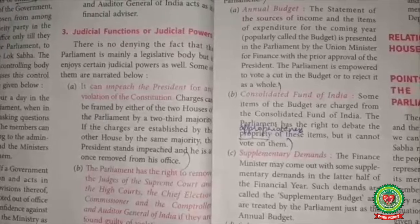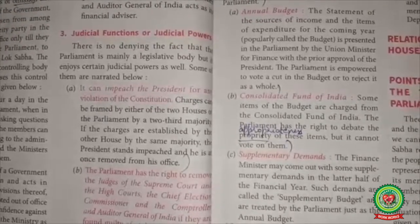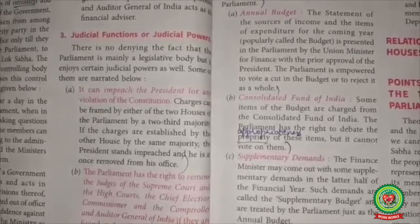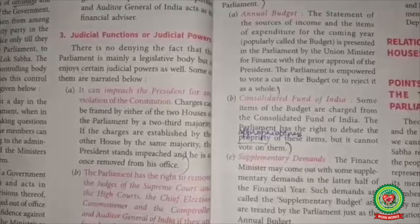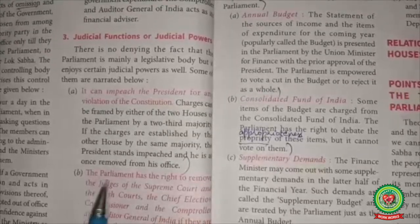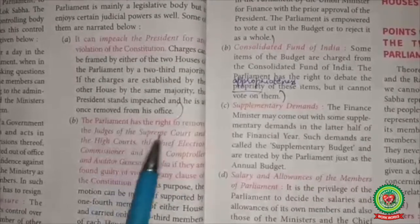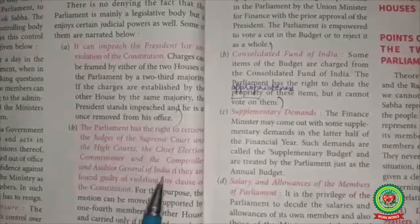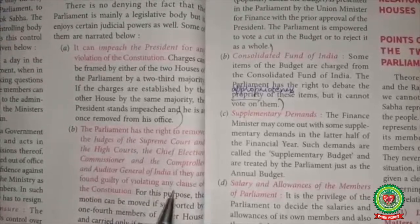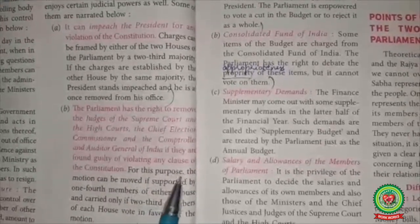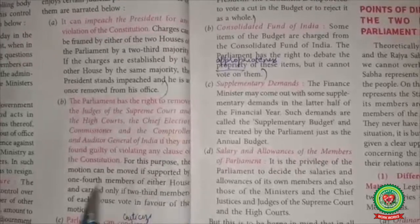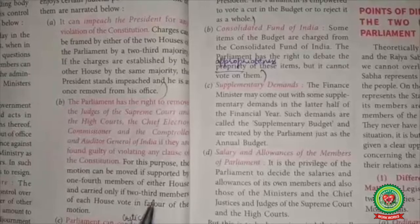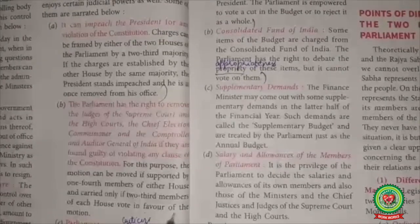If the President or Vice President breaks any law against the constitution, they can be impeached or removed by Parliament. The President can be removed from office by a two-third majority in Parliament. Parliament also has the right to remove the judges of the Supreme Court and High Courts, the Chief Election Commissioner, and the Comptroller and Auditor General of India if they are found guilty of violating any clause of the constitution. For this purpose, the motion can be moved if supported by one-fourth of members of either house and carried only if two-third members of each house vote in favour.